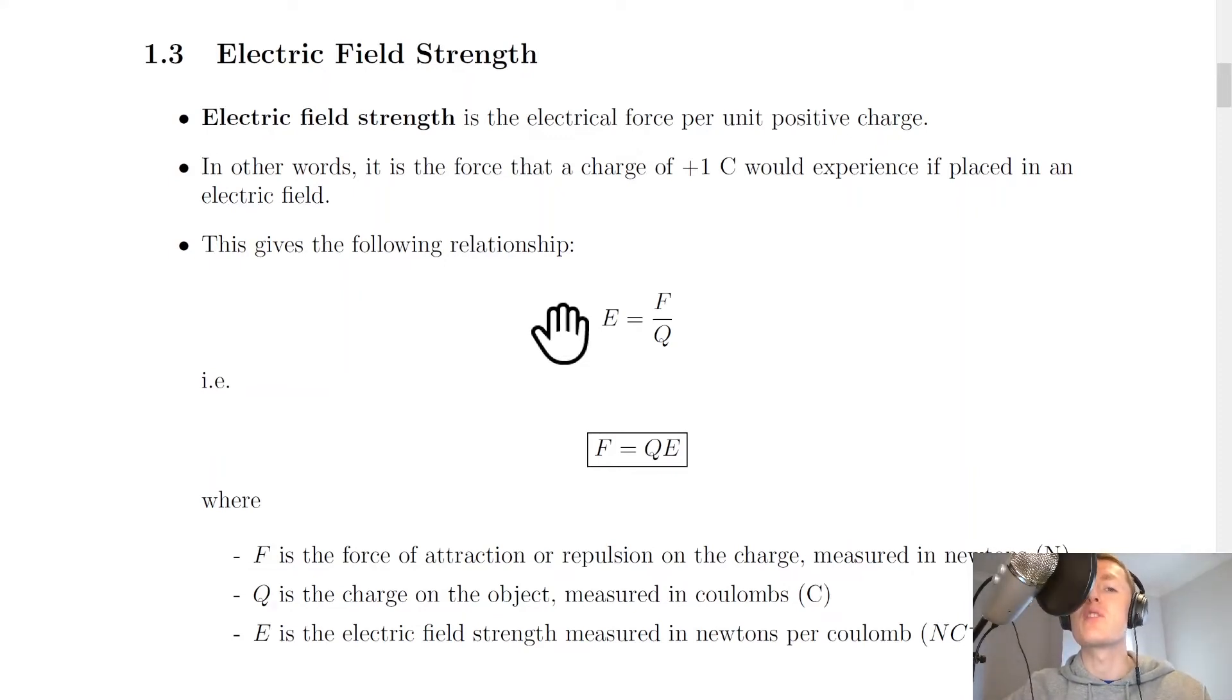Now we first need to define what electric field strength actually is. Electric field strength is the electrical force per unit positive charge. This follows from the rule that field lines always go from positive to negative, in the direction that a positive charge would move if placed in an electric field. In other words, it is the force that a charge of plus one Coulomb would experience if placed in an electric field.